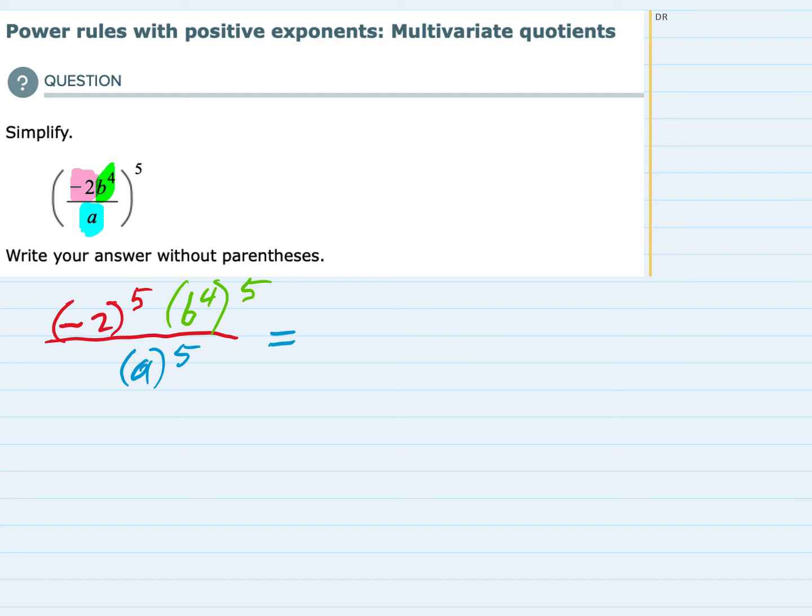To simplify this I'm going to take each one individually. First the number. We have negative 2 raised to the fifth power. That is five negative 2's being multiplied.